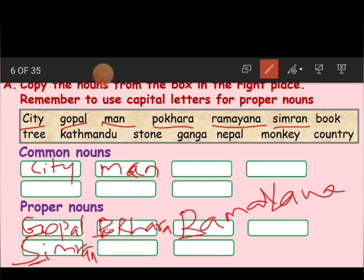Book is a thing, so it comes under common noun — written with a small letter. Tree is again a thing. We did not give the tree a name like mango tree or rose tree, so tree comes under common noun. Kathmandu is the name of a place, so it comes under proper noun with a capital letter. Stone is a thing with no name — common noun. Ganga may be a name of a river or a person — it is a naming word, so proper noun. Nepal — proper noun. Monkey is an animal with no specific name given — common noun. Country — any country, we are not naming it — common noun. Remember: common nouns are always written in small letters, and proper nouns always start with a capital letter.